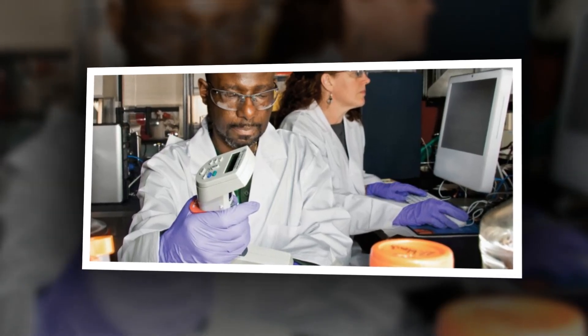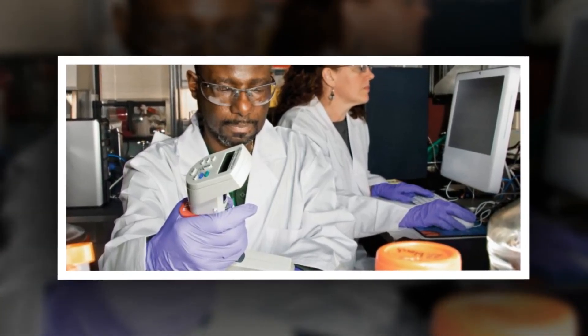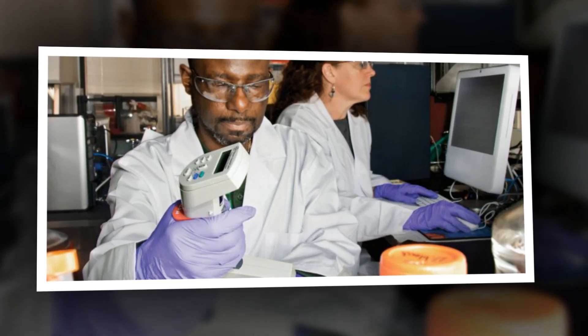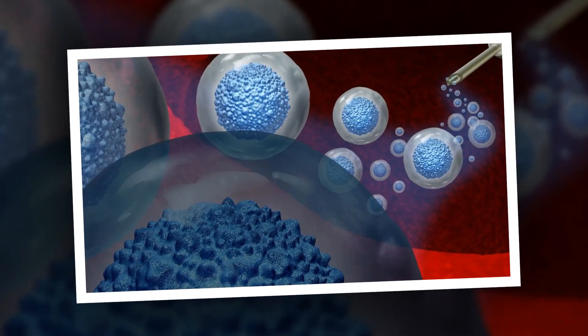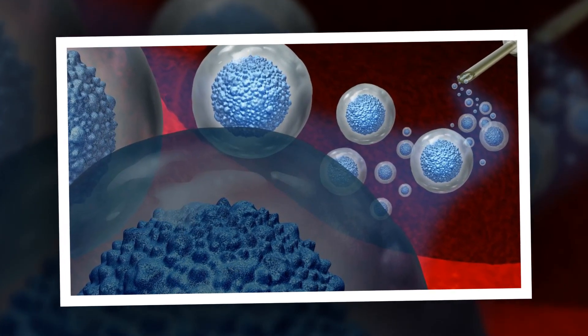Hematopoietic refers to an immature cell that can develop into all types of blood cells including white blood cells, red blood cells, and platelets. Hematopoietic stem cells are found in the peripheral blood and the bone marrow and are also called blood stem cells.